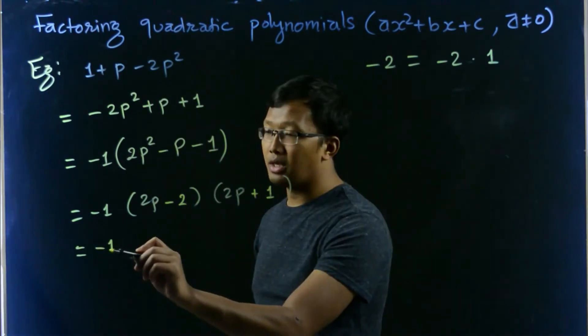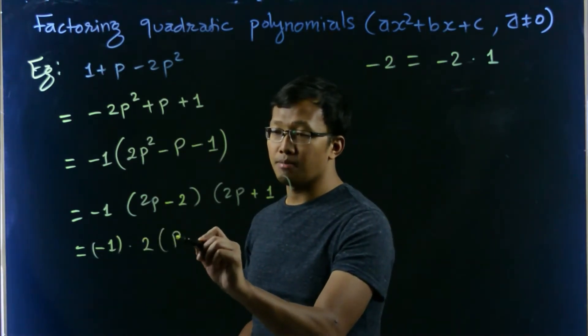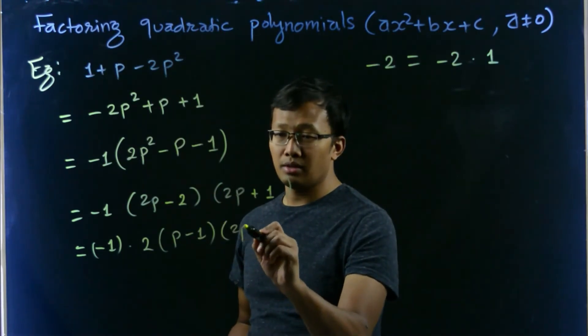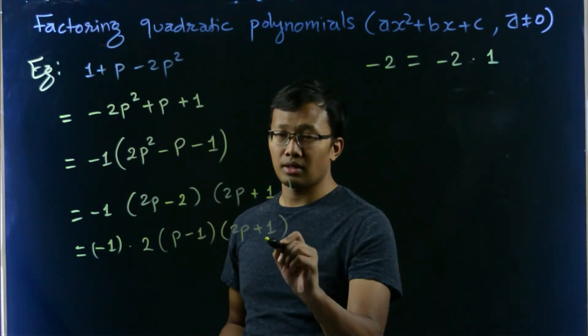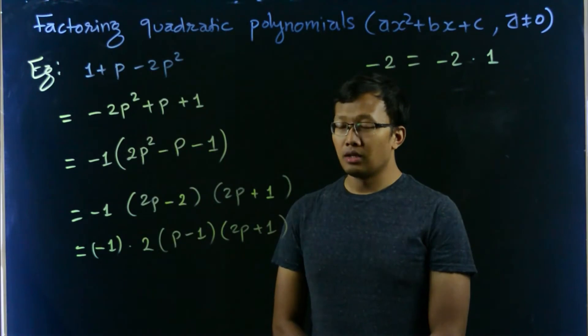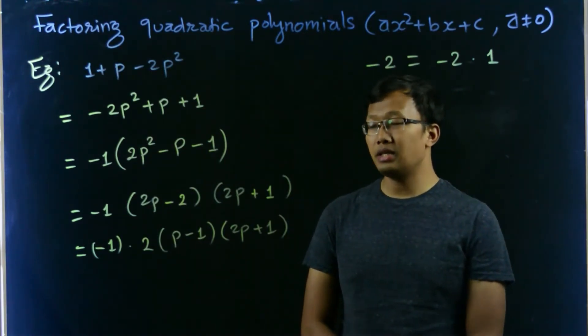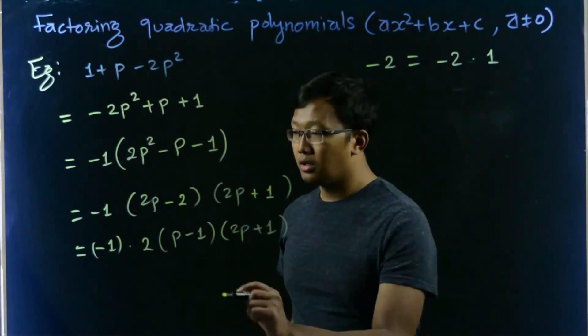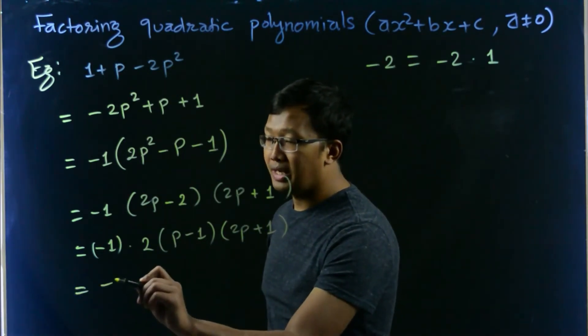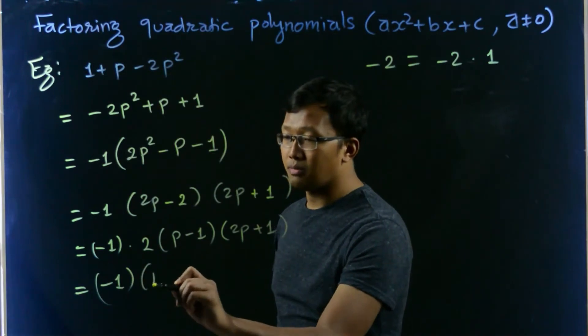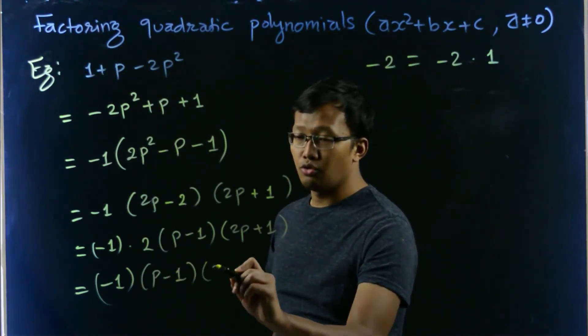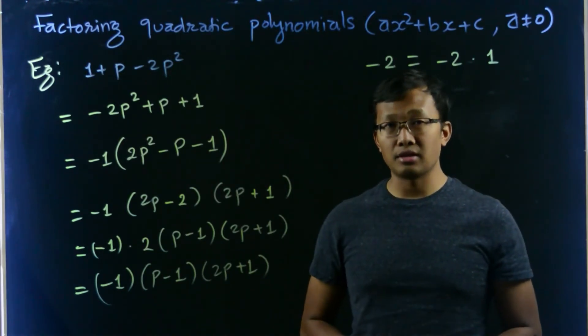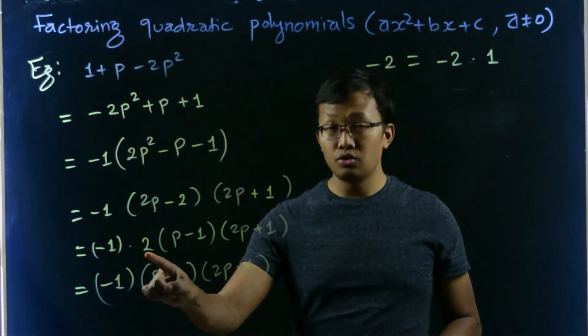That's negative 1 times 2, this is p minus 1, and this is 2p plus 1. Thus we can simply ignore this 2, not the negative 1. So it would be negative 1 times p minus 1, 2p plus 1. That's our correct factorization. Here we ignore 2, but negative 1 is inherent in here, so we don't ignore that.